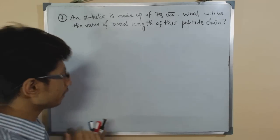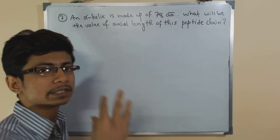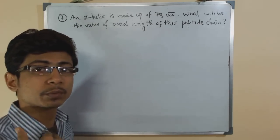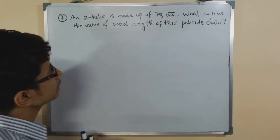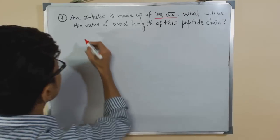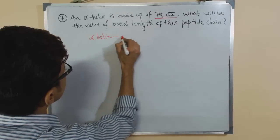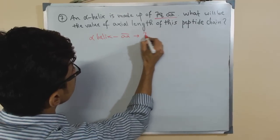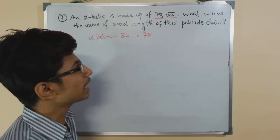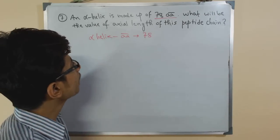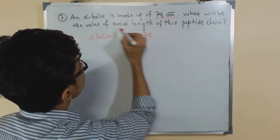In any problem, there are two things: what they provide us and what we need to find. What they've provided us is that the total alpha helix is made up of 78 amino acids. What we need to find is the axial length.